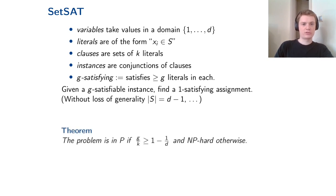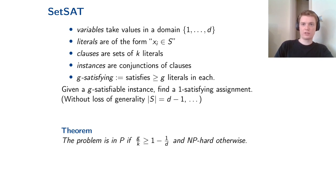In short, what we show is that the problem is solvable in polynomial time when g/k is above some threshold and NP-hard otherwise. This generalizes the previous result: for the Boolean domain (d = 2) this threshold is exactly 1/2. Nevertheless, to prove the hardness results we had to use new tools and extend the algebraic framework.